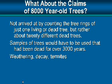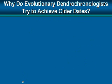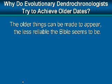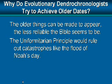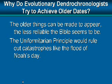Why do evolutionists — especially evolutionary dendrochronologists — want to achieve dates older than 4,000 to 4,500 years? Part of it is the assumption that the Ice Age occurred 10,000 years ago, so they want to push dates back to 10,000 years if possible. Also, if you stretch the apparent age of things, some want to undermine faith in the Bible — the older things appear, the less reliable the Bible seems. The uniformitarian principle, widely used in scientific circles, holds that the present is the key to the past and that there was never a catastrophe — a principle that would rule out an event like Noah's flood.